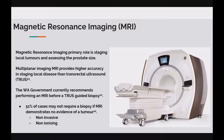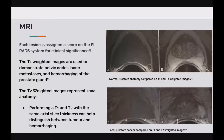MRI's primary role is staging local tumours and assessing the prostate size. Multiplanar imaging MRIs provide higher accuracy in staging local disease than transrectal ultrasound. The Western Australian government recommends performing an MRI before a truss-guided biopsy, supported by a study demonstrating that 51% of cases may not require a biopsy if MRI demonstrates no evidence of a tumour. Each lesion is assigned a score on the PIRAD system, where PIRAD 1 is considered very low and PIRAD 5 is considered very high for clinical significance. T1-weighted images demonstrate pelvic nodes, bone metastases and haemorrhaging, while T2-weighted images represent the zonal anatomy. Performing T1 and T2 with the same axial slice thickness can help distinguish between tumour and haemorrhaging more effectively.